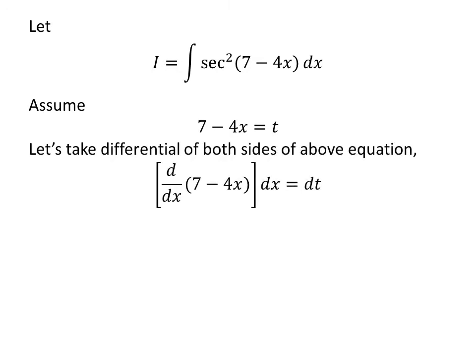Taking differential of both sides of the above equation gives us derivative of 7 minus 4 times x with respect to x times differential of x is equal to differential of t.